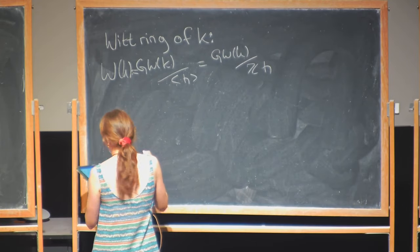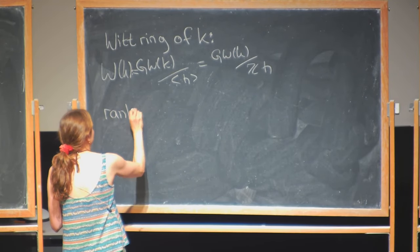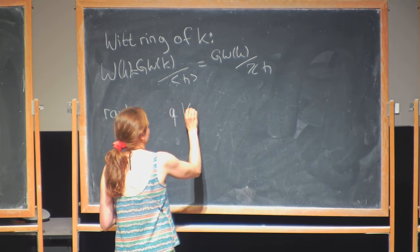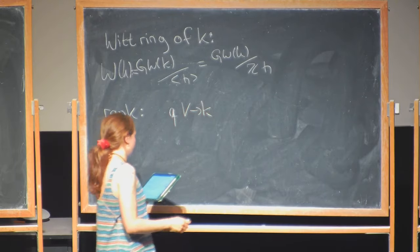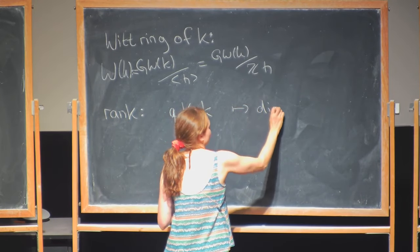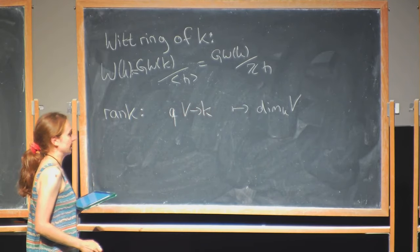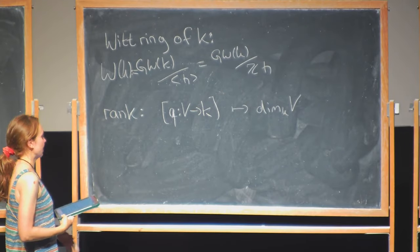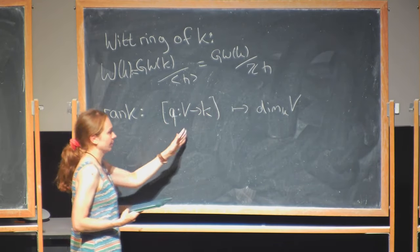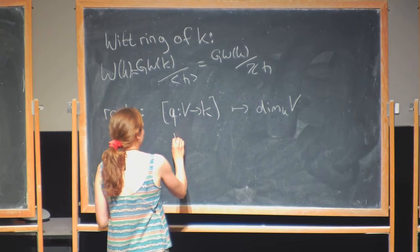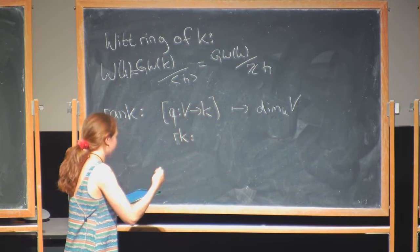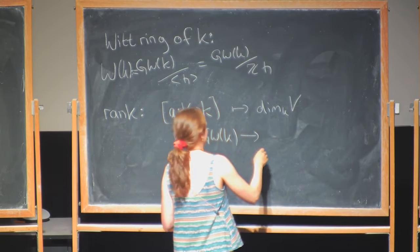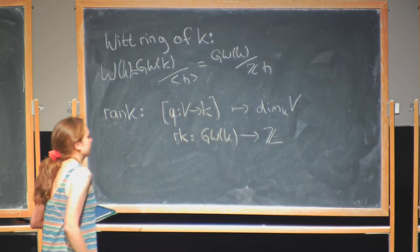Before doing examples, let me introduce the rank. Given a quadratic form on a K-vector space V, I assign the integer equal to the dimension of V. This doesn't change up to isometry, so we get a rank homomorphism from GW(K) to the integers.